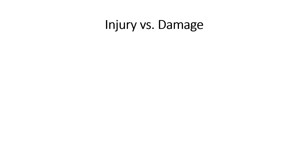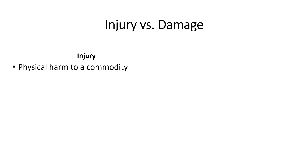Before looking into the thresholds, it is important for us to know the distinctions between injury and damage, as they play an important role in determining the time and types of management. Injury is the physical harm to a commodity caused by the presence or activity of a pest. It can be a direct or an indirect injury, such as eating leaves, tunneling through stalks, or boring into fruits.